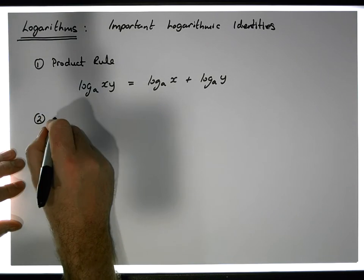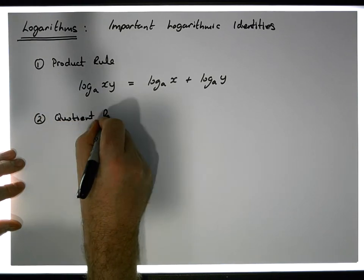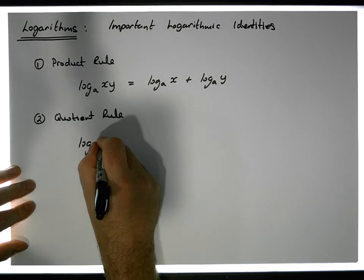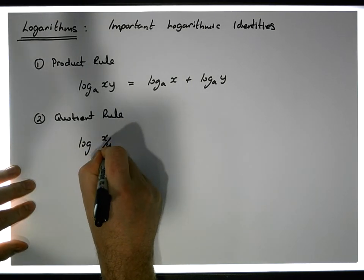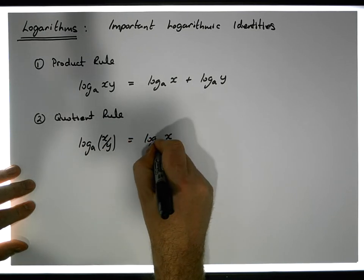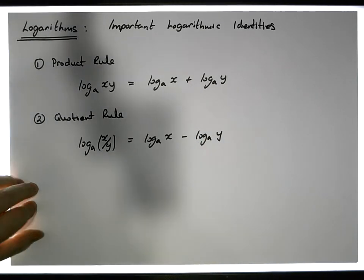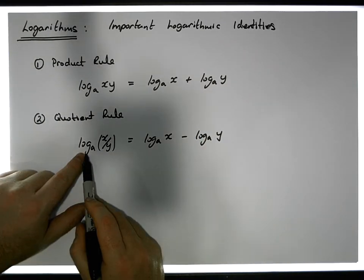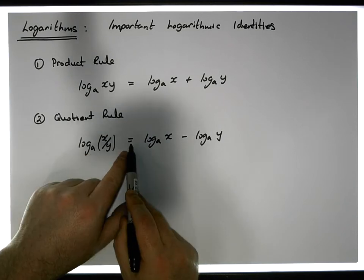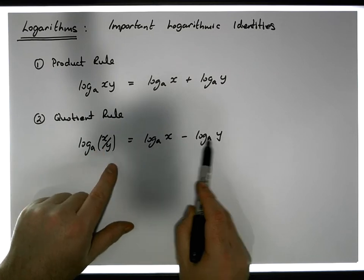Then we have the second rule, known as the quotient rule, which tells us that the log of x/y to the base a is the same as the log of x to the base a minus the log of y to the base a.